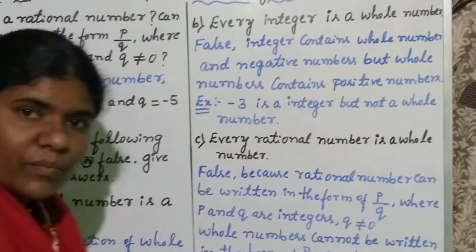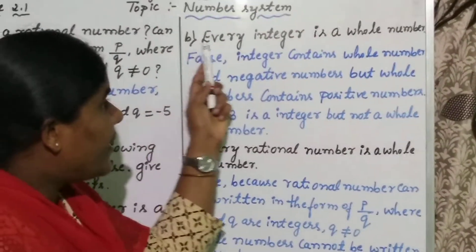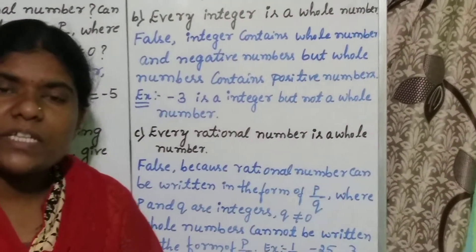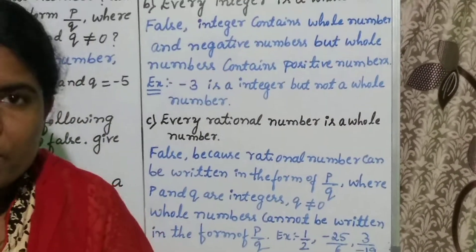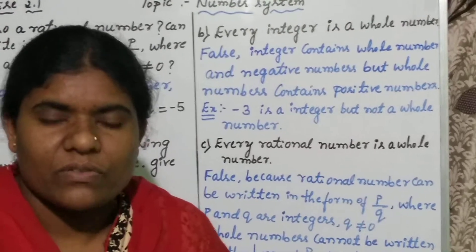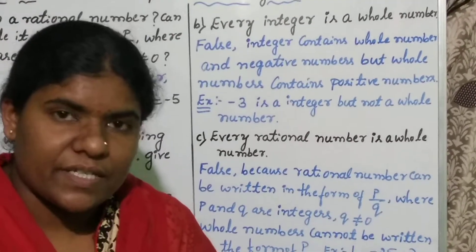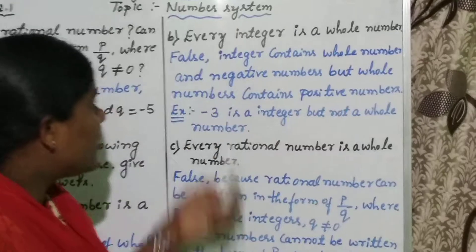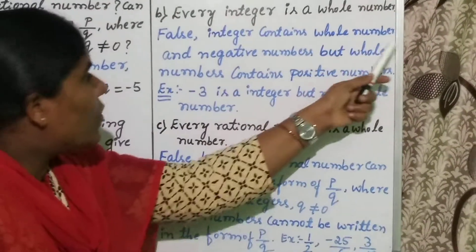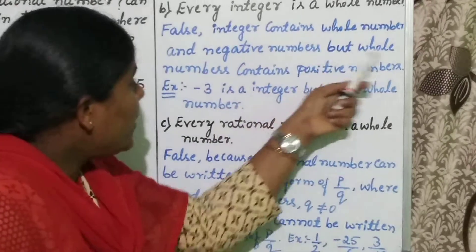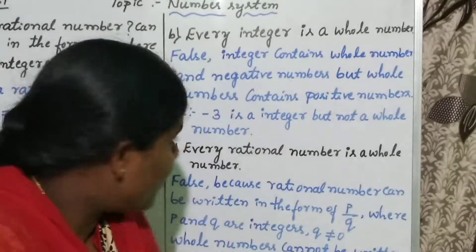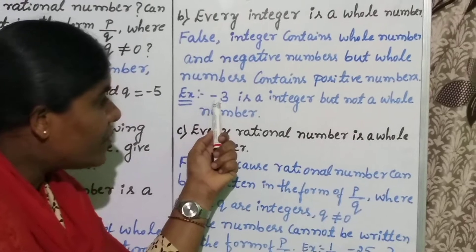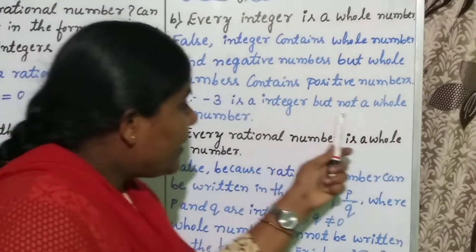Moving on to the second statement: every integer is a whole number. Observe carefully. The statement is FALSE. Because integers contain positive numbers, negative numbers, and 0. But whole numbers contain only positive numbers and 0. For example, minus 3 is an integer because it is a negative number, but it is not a whole number since whole numbers contain only positive numbers.